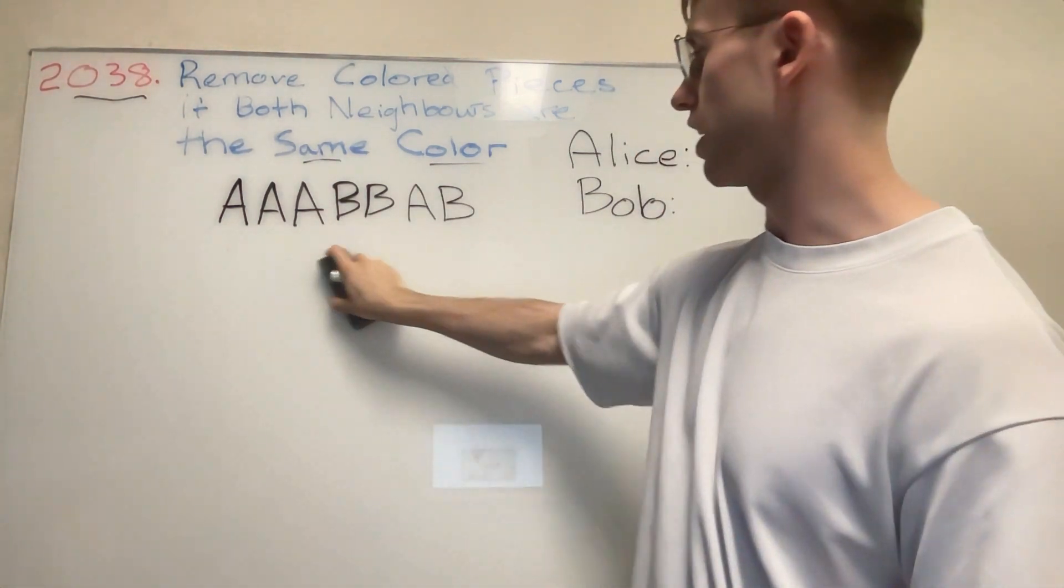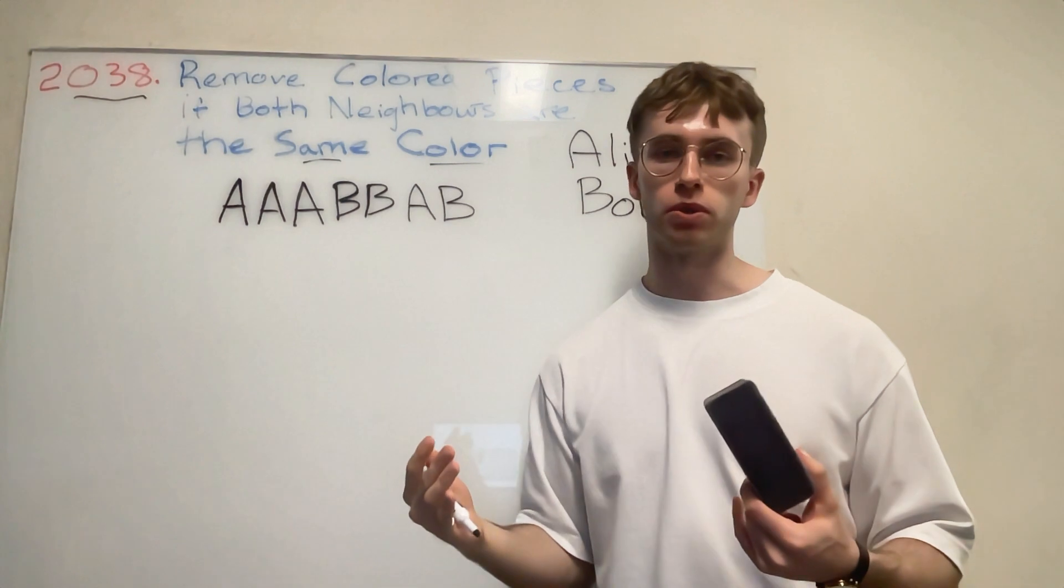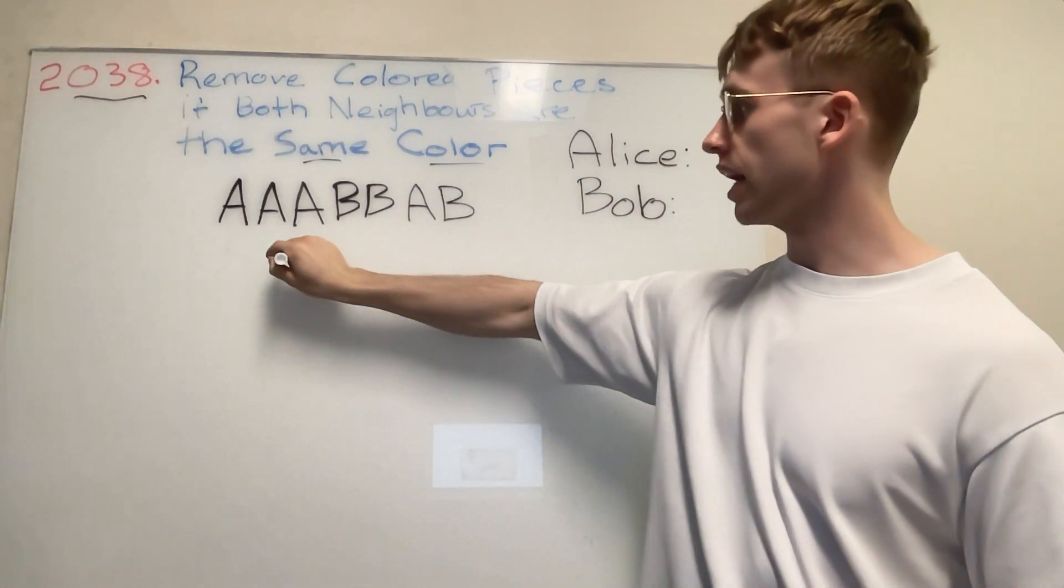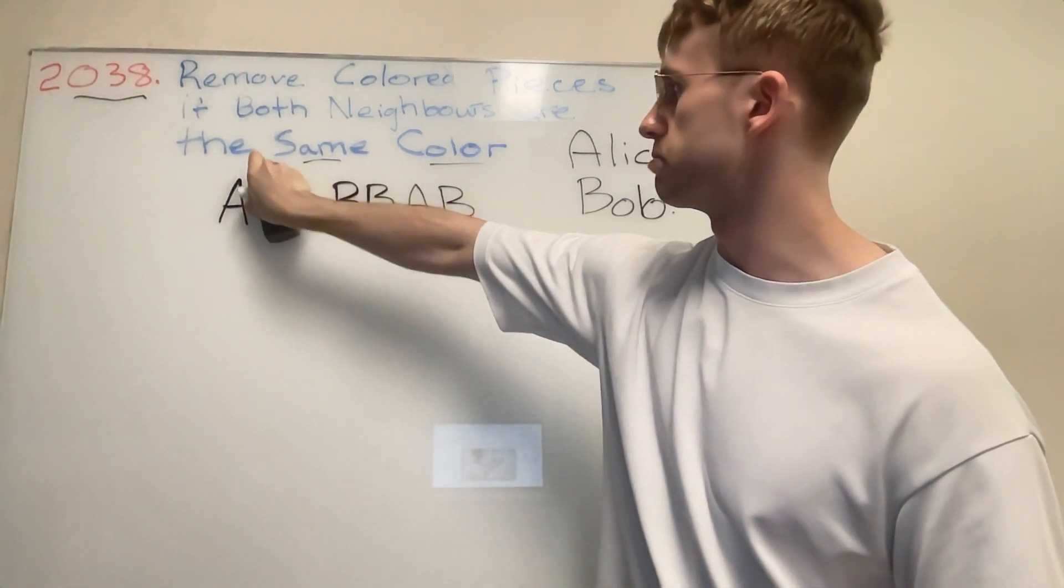The game will keep going until one of them can no longer make a move. For this example it's pretty simple. When it's Alice's turn, Alice can remove this letter A here, so this middle one will go away.